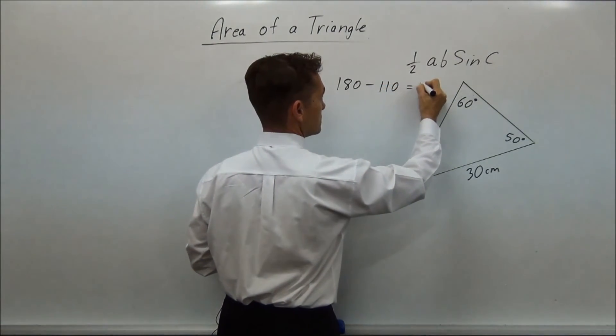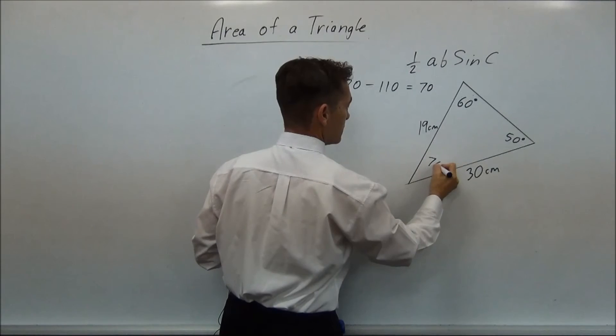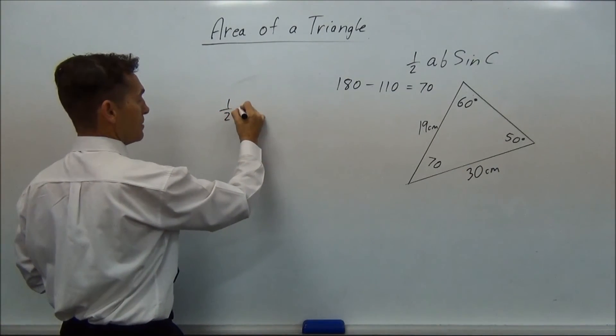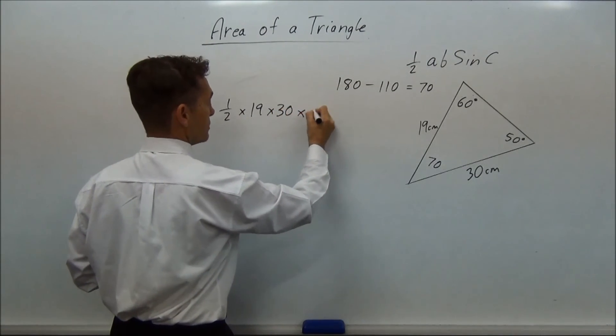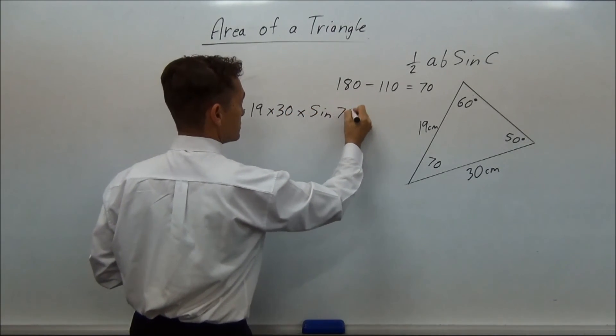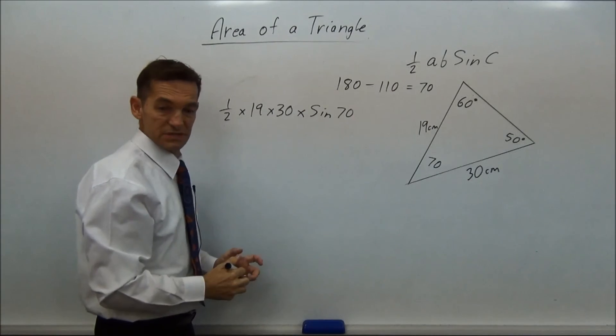So that would equal 70. So then we're going to go half multiplied by 19 multiplied by 30 multiplied by sine 70. And that would be as difficult as you can.